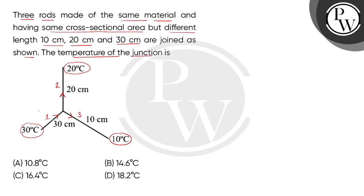तो बच्चों, rod 1 में heat को H1, rod 2 में H2, और rod 3 में H3 मान लेते हैं। By the law of conservation of energy, हमें मिलेगा: H1 = H2 + H3.